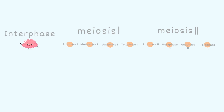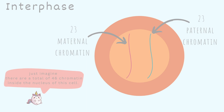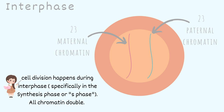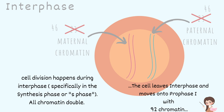Let's do a quick recap on what happens in interphase before the cell enters meiosis. Here is our cell and here is our nucleus. Inside the nucleus, we have 23 maternal chromatins and 23 paternal chromatins. Maternal comes from the female and paternal comes from the male. There should be a total of 46 chromatins in this illustration. The major thing that happens in interphase is DNA replication, specifically in the S phase or synthesis phase. This means all chromatins are doubled because they all make one copy of themselves. Since there is double the amount of chromatin, we now have 46 maternal and 46 paternal chromatins. The big takeaway is that the cell leaves interphase with 92 total chromatins.